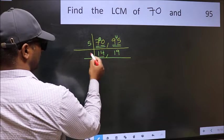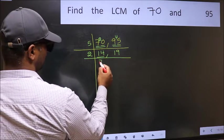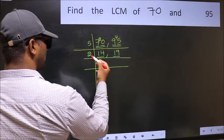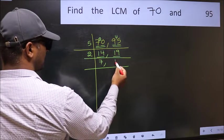Now here we have 14. 14 is 2 sevens 14. The other number 19 is not divisible by 2, so you write it down as it is.